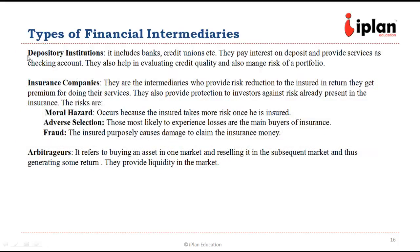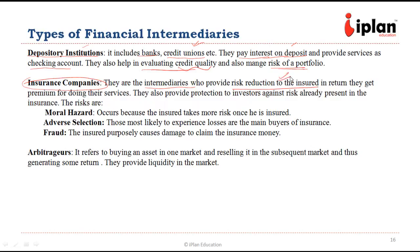Depository institutions, such as banks or credit unions, pay interest on deposits and provide services like checking accounts. They also help in evaluation of credit quality and management of risk for a portfolio. Insurance companies are also intermediaries who are a hedge against an adverse event. They provide risk reduction to the insured and in return receive a premium for that service.